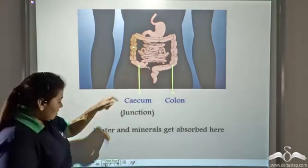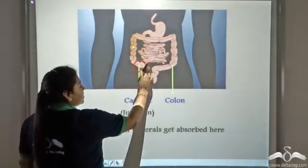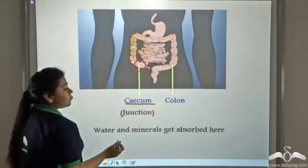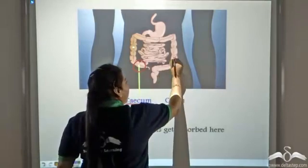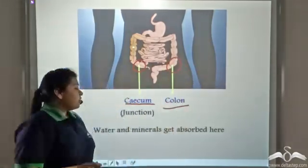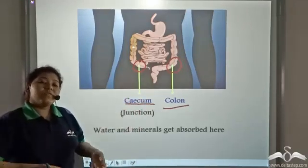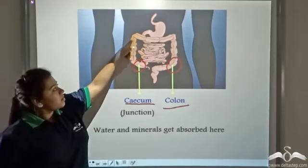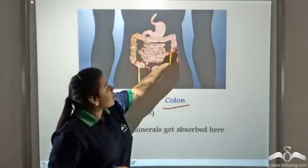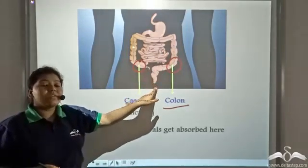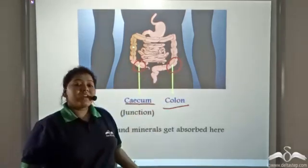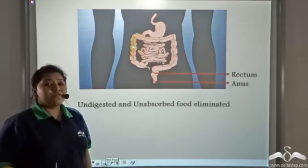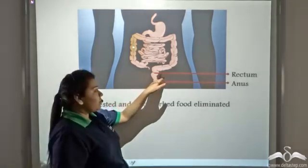Now this region of the large intestine which is at the junction of the small intestine and the large intestine is known as the cecum. And this region of the large intestine is known as the colon. So it is in these two regions that the water and the minerals get absorbed. Unabsorbed food travels through the cecum and the colon and finally gets excreted out of the body through the rectum and the anus.